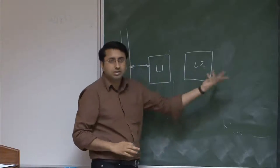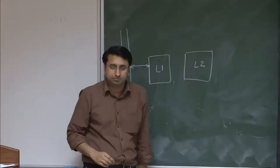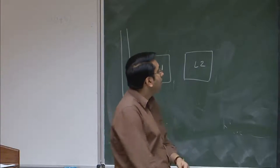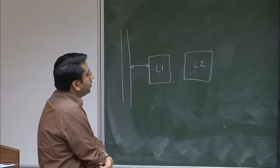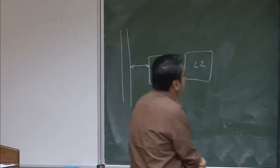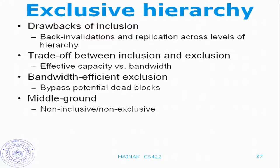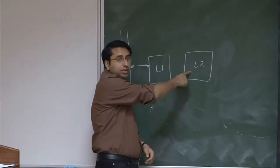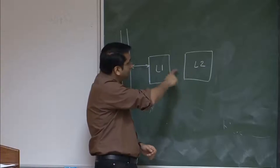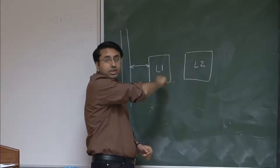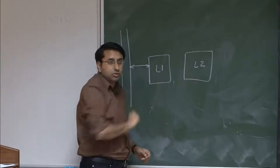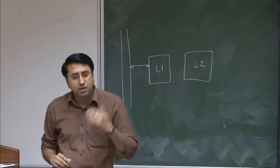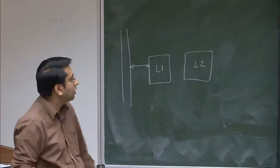If you have an exclusive hierarchy, this problem goes away — both problems actually. You don't have any duplication across levels, and you don't have to worry about back invalidation. Whenever you evict a block from L2, you can just evict it, because there is no guarantee about the subset. All you have to make sure is that these are exclusive — whenever a block is in L2, it's not in L1. The trade-off is that exclusion buys you capacity because there is no duplication, but it requires more bandwidth because whenever a block gets evicted from L1, it has to be allocated to L2 and traverse the bus between L1 and L2.